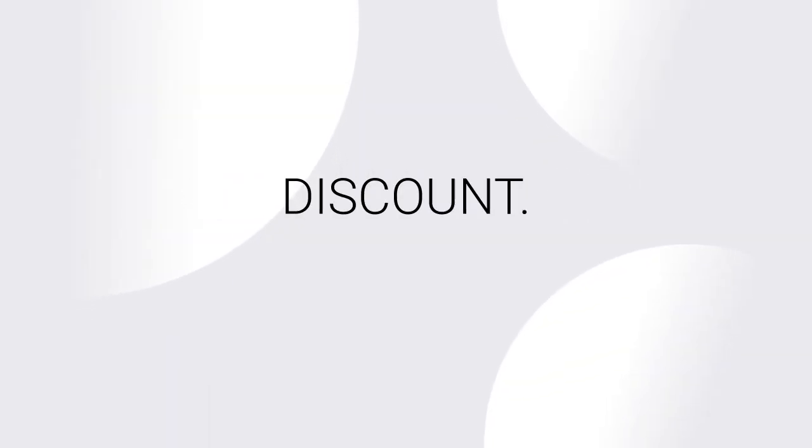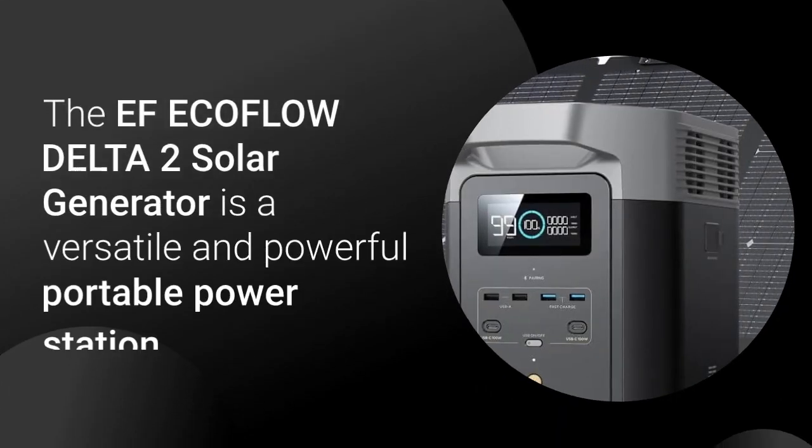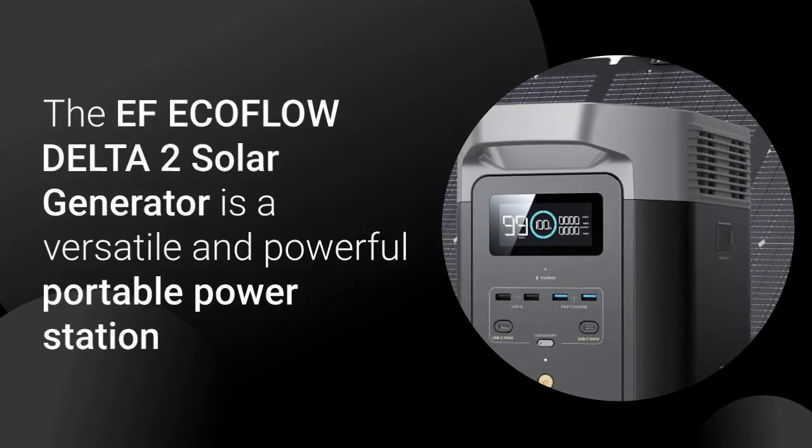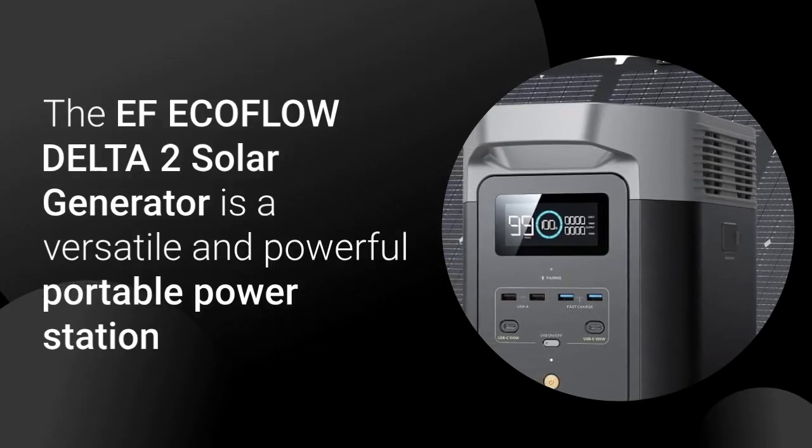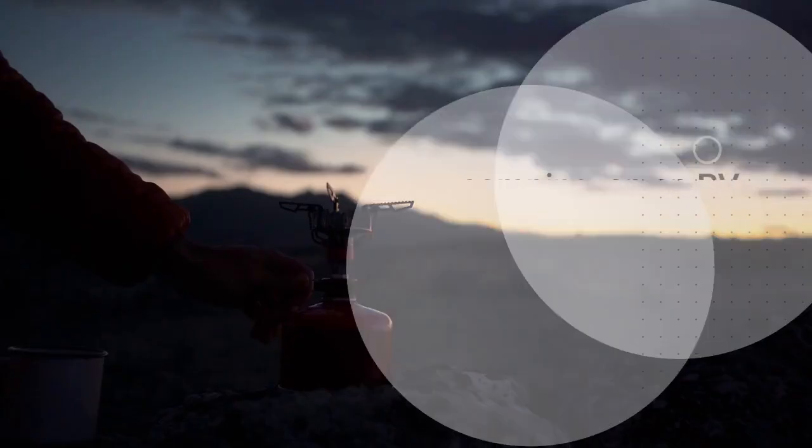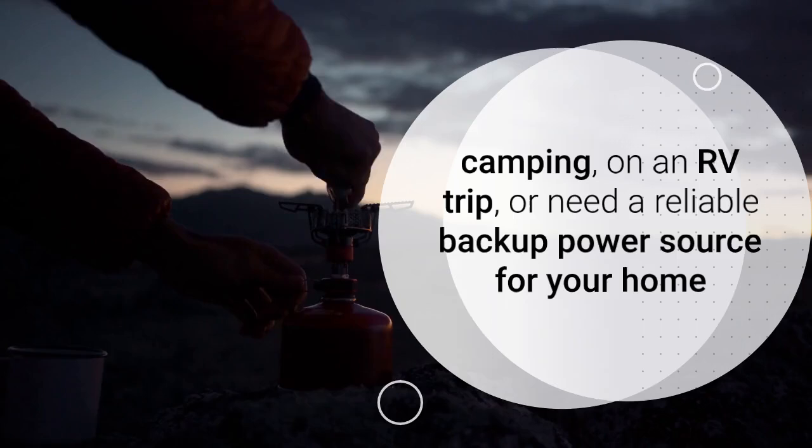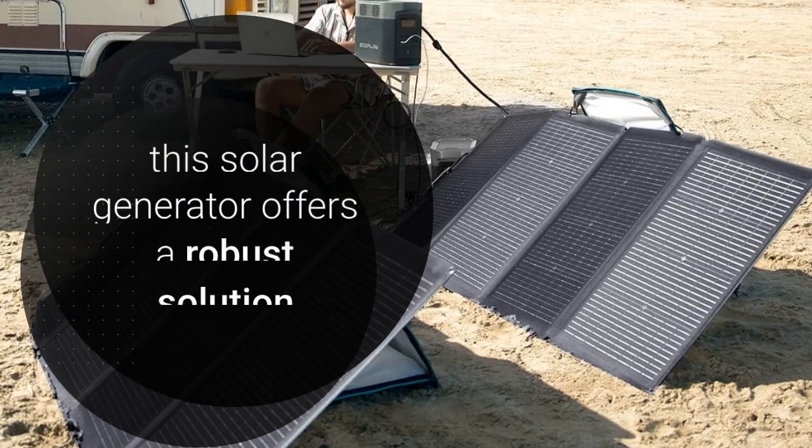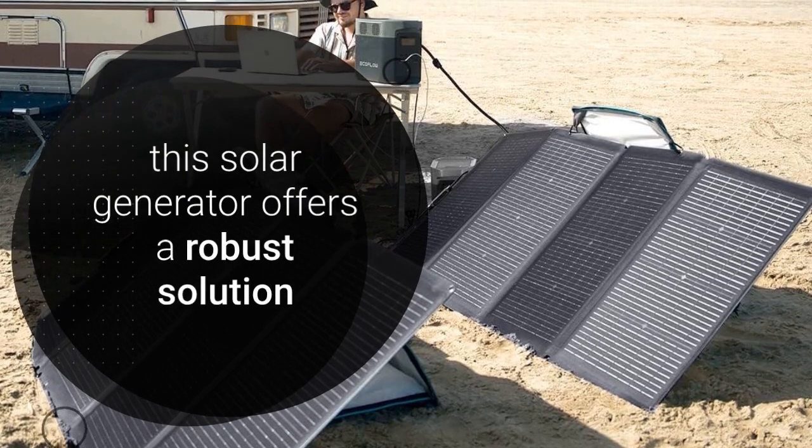Click on the link below to get discount. The EF EcoFlow Delta II Solar Generator is a versatile and powerful portable power station designed to meet various energy needs. Whether you're camping, on an RV trip, or need a reliable backup power source for your home, this solar generator offers a robust solution.